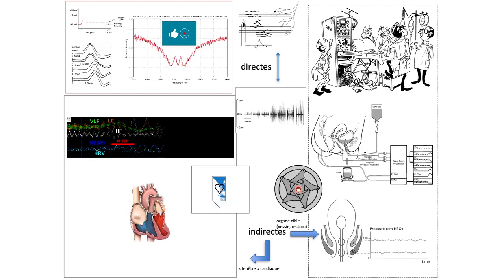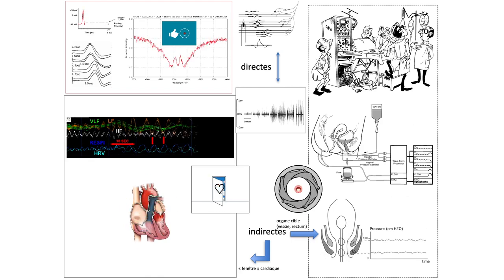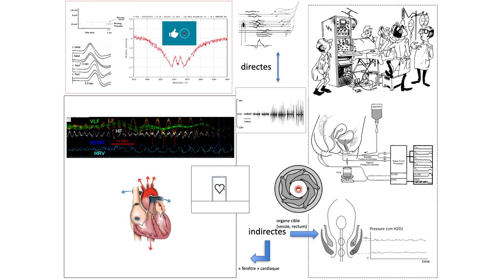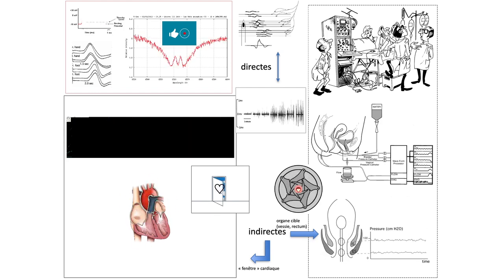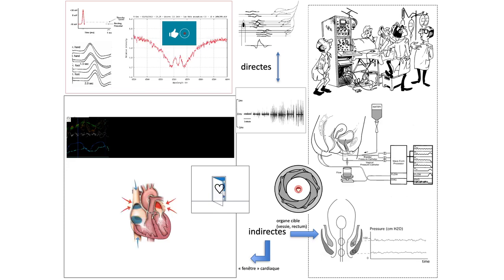D'une manière indirecte, on peut aussi analyser l'effet du système nerveux végétatif sur les effecteurs, à savoir le rectum et la vessie, par l'intermédiaire d'un bilan urodynamique ou d'une manométrie anorectale. On ne parlera pas aujourd'hui de l'urodynamique ni de la manométrie anorectale, et on va se focaliser sur les mesures indirectes de cette activité végétative.